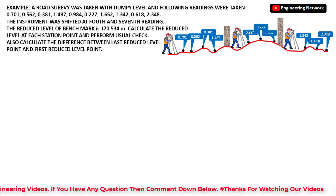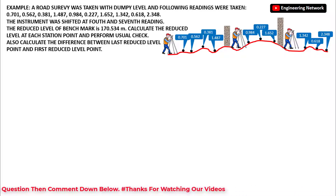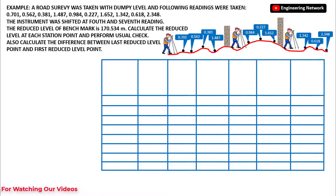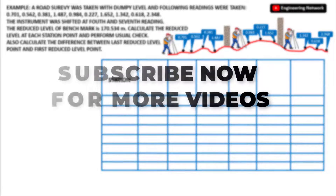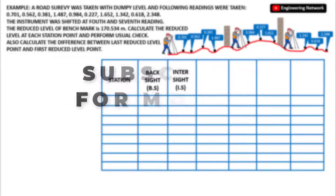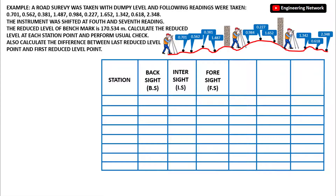This is a simple numerical question. To solve it, first let me draw the line of collimation table. In this table: the first column is station, second column is backsight, third column is intermediate sight, fourth column is foresight, fifth column is height of instrument (HI), sixth column is reduced level, and seventh column is remarks.